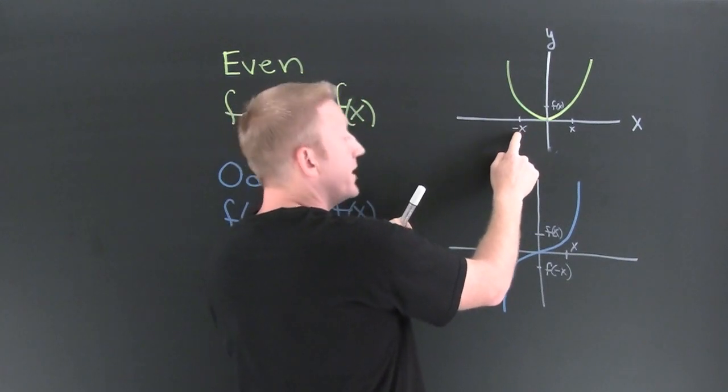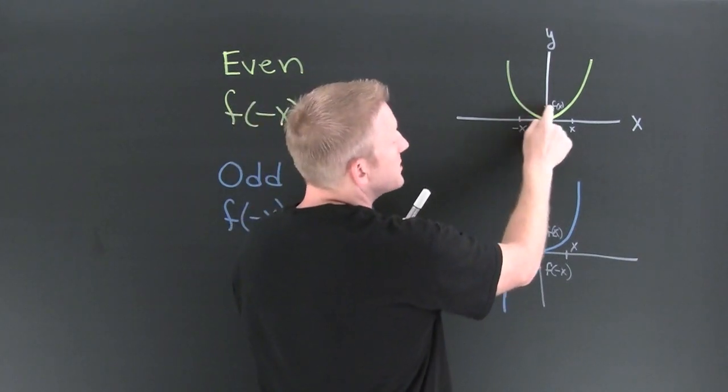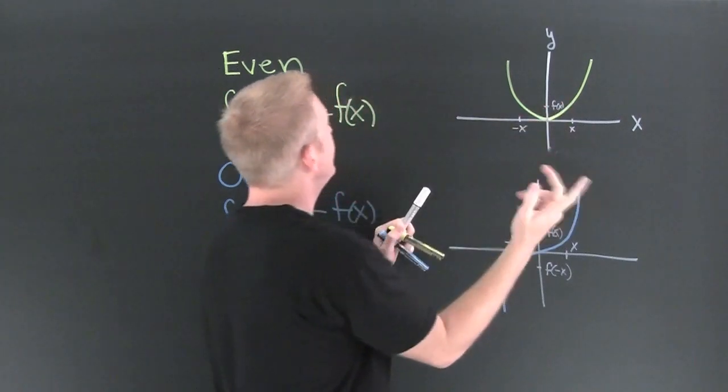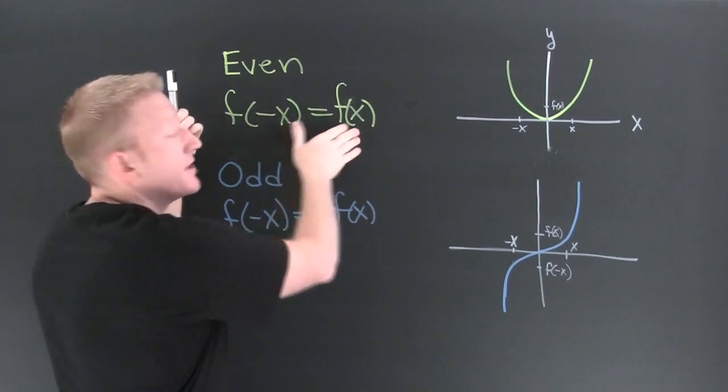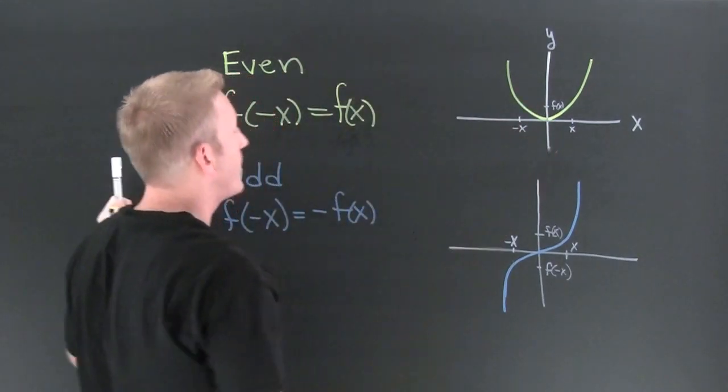Conversely, if we evaluated it minus x, that's also the same value, and that's what that says, that these two are going to be the same. Yes, that's how we get our symmetry property.